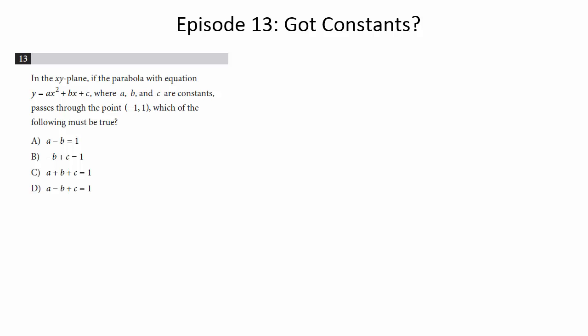In the xy-plane, if the parabola with equation y equals ax squared plus bx plus c, where a, b, and c are constants, passes through the point negative 1, 1, which of the following must be true? Whenever you have a question where they have constants in the equation, and sometimes they want you to find the constant value — what is the value of a or what is the value of b — or in this case they're wanting to know the relationship between these three constants, the key is to find a point and plug it into the equation.